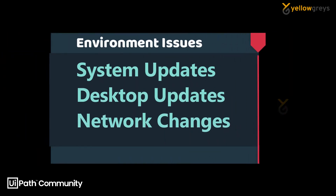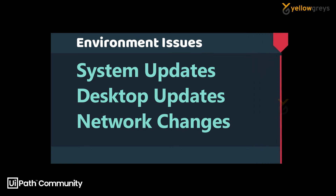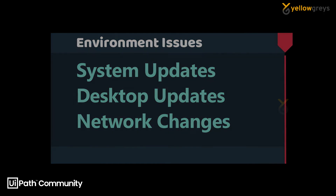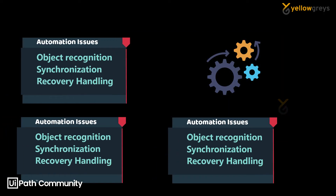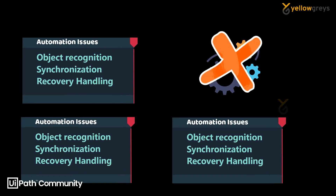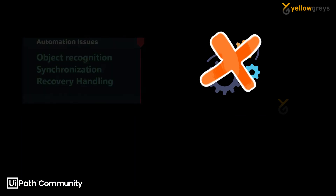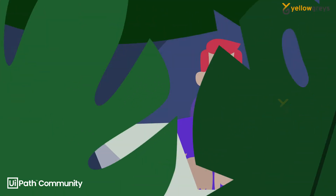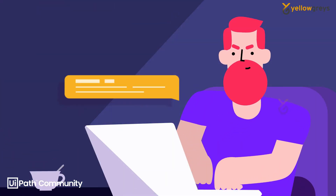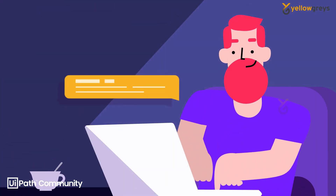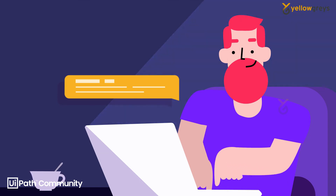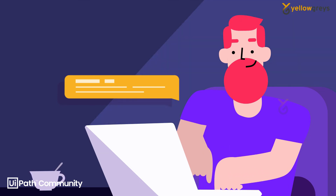We also have other possibilities on the environment side, which are system updates, desktop updates, and network updates. These are the reasons for our automations stopping to work.